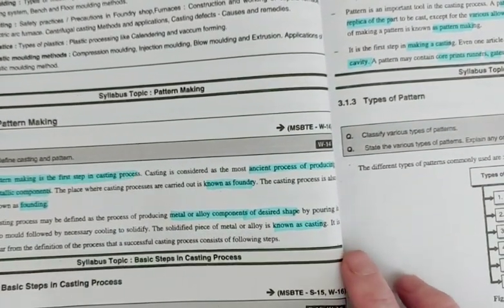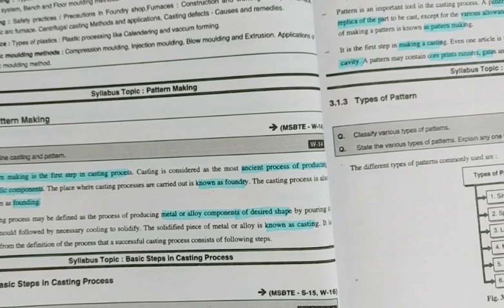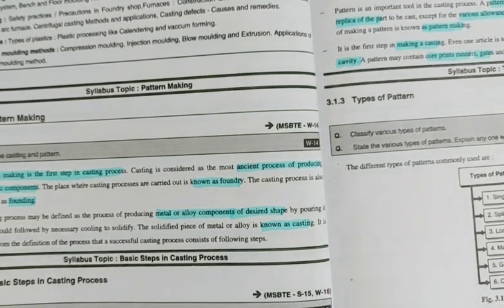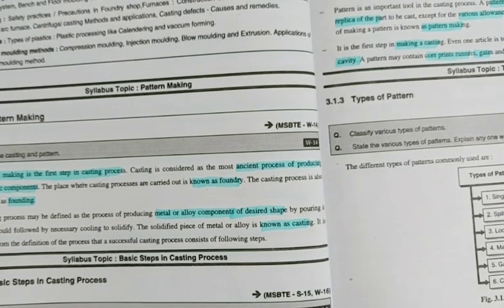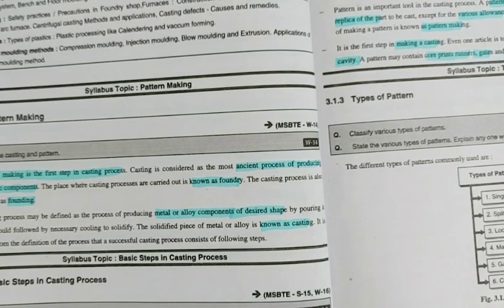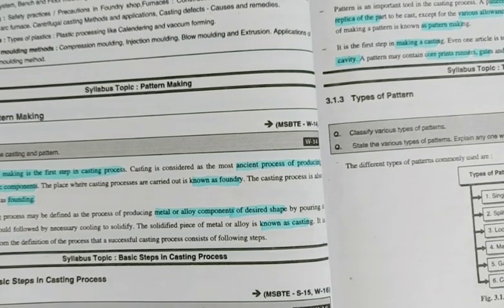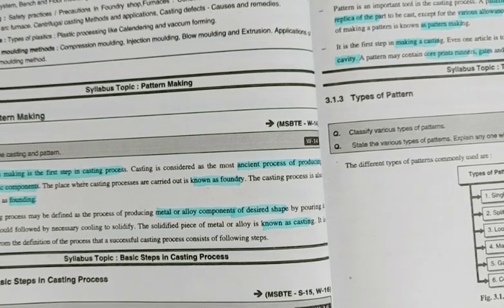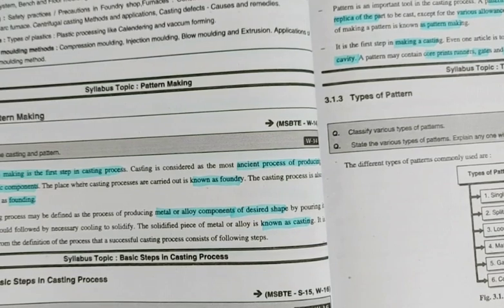So what is pattern making? Pattern making is the first step of the casting process in which a replica of the product is made, and that replica is called a pattern. Casting is considered the most ancient process of producing metallic components. The place where casting processes are carried out is known as a foundry. The casting process is also known as founding.